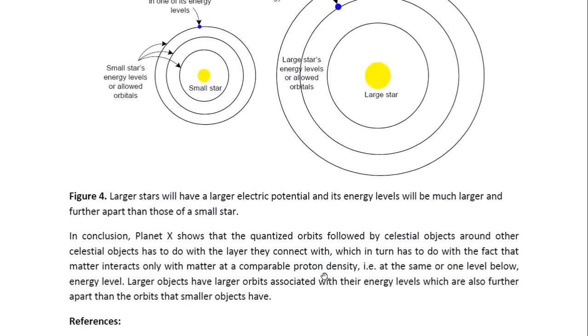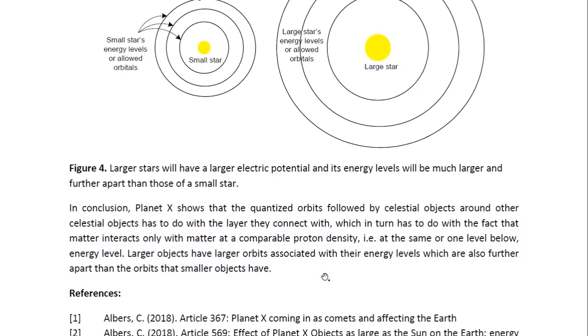In conclusion, Planet X shows that the quantized orbits followed by celestial objects around other celestial objects have to do with the layer they connect with, which in turn has to do with the fact that matter interacts only with matter at a comparable proton density. In other words, at the same or one level below energy level. Large objects have larger orbits associated with their energy levels, which are also further apart than the orbits that smaller objects have.